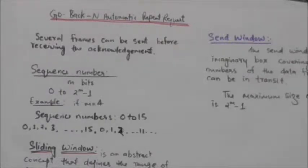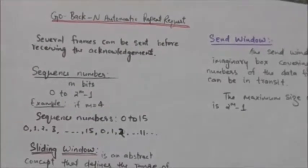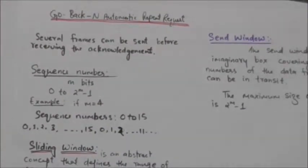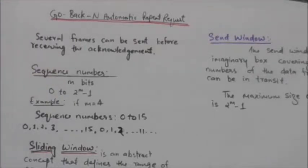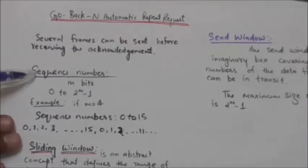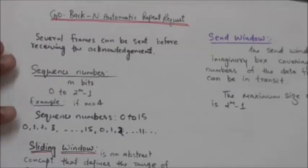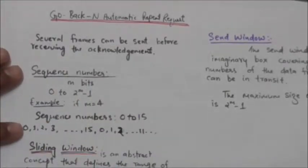Welcome back. In this tutorial we will study about Go-Back-N Automatic Repeat Request protocol. It is a sliding window protocol where several frames can be sent before receiving acknowledgements, and a copy of these frames is kept until the acknowledgements arrive. In this protocol, frames are numbered sequentially. If in the header of the frame only m bits are allowed for the sequence number, then the sequence numbers will range from 0 to 2 raised to power m minus 1.